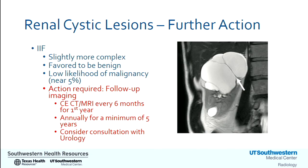Now we move to the group of lesions that require further action. The first is the Bosniak 2F, with the F denoting follow-up imaging. These are slightly more complex cystic lesions, still favored to be benign, carrying a low likelihood of malignancy said to be near five percent. For confirmation, follow-up imaging is required — contrast-enhanced CT or MRI every six months for the first year, then annually for a minimum of five years. Urology consultation should be considered given the low but possible increase in complexity or classification on follow-up imaging.